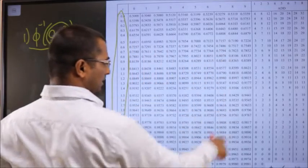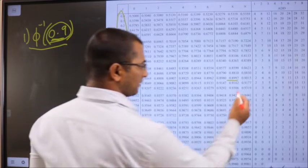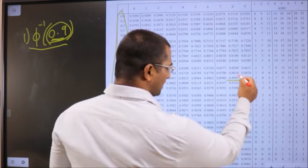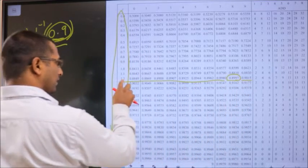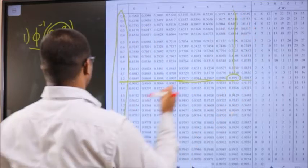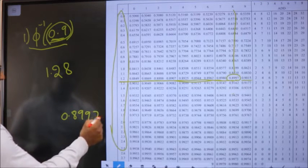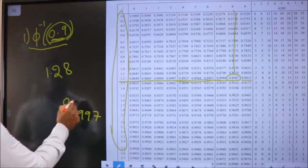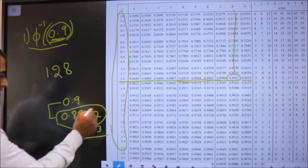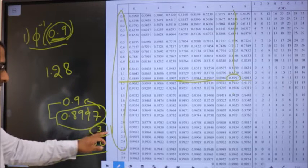We don't have exact 0.9 in the table — we have 0.8997 and 0.9015; one is less than 0.9, the other is greater. So we take 0.8997. This is present at row 1.2 and column 8, so 8 becomes the second decimal. I have 0.8997 but I am trying to find 0.9, so more 3 should be added — 7 plus 3 gives 10 — to get 0.9.